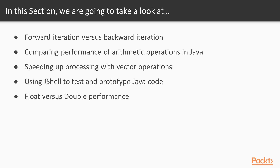We'll be speeding up our processing with vector operations, applying vector processing on top of our operations and comparing different data types. Using JShell to test and prototype Java code will be covered in video 4. Finally, we'll be doing a float versus double performance comparison to see how operations using float and double are performing.